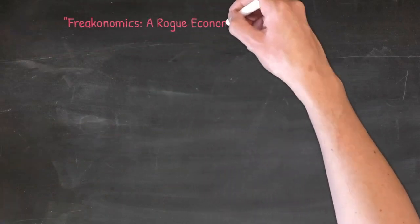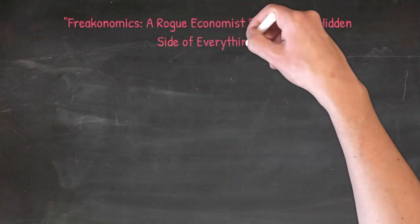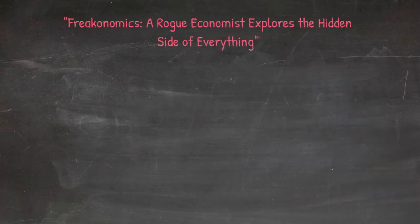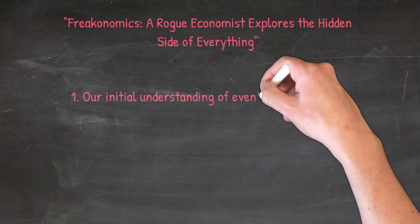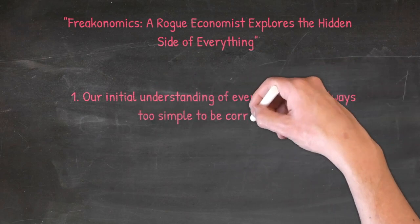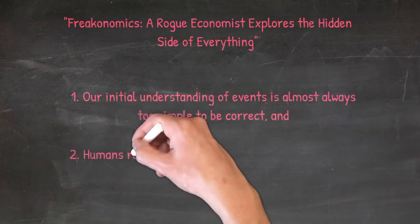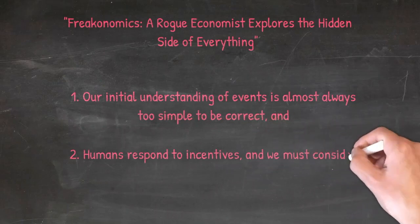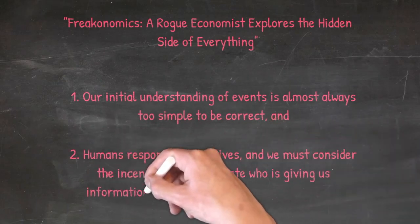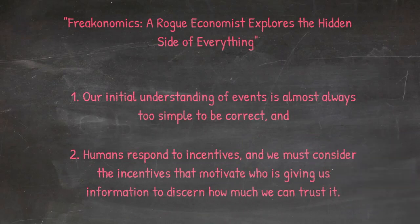After rereading Freakonomics, I've been reminded of two truths that are essential to know in this age of information. First is that our initial understanding of events is almost always too simple to be correct. And the second is that humans respond to incentives, and we must consider the incentives that motivate who is giving us information before we can determine how much we can trust it.